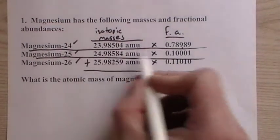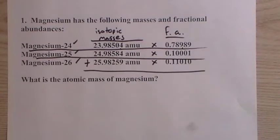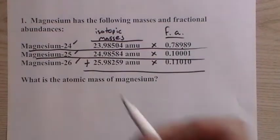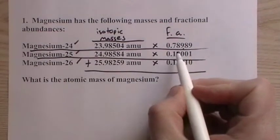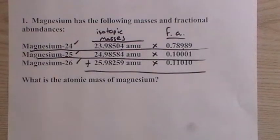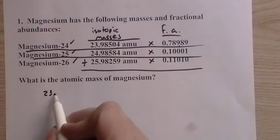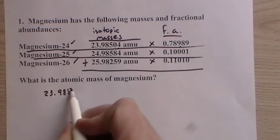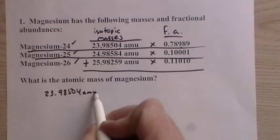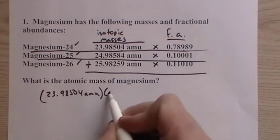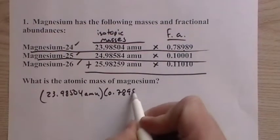The reason we have so many significant figures is that we don't want to lose any when we add them together. If we only had three here and three here, we could end up really losing a lot of information. So we want as many as we can have here. So it's going to be 23.98504 AMU times its fractional abundance, 0.78989.